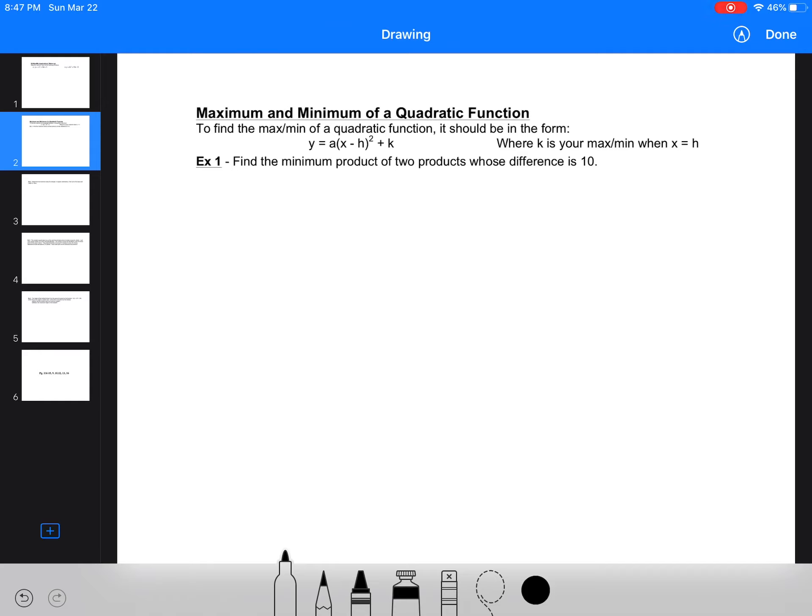So whenever we're finding the max or min of a quadratic, you want it to be in vertex form, obviously, because that gives us the max or min value. But you can use the negative b over 2a. I'm probably not going to during this note, but it can be done. Find the product or minimum product of two numbers whose difference is 10. So first thing we need to do is make a let statement. Let x be the first number.